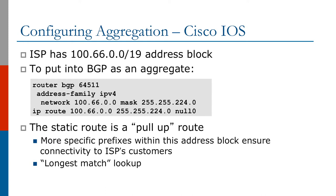So how do you configure an aggregate? We will be providing examples based on Cisco IOS. Imagine an ISP has been allocated 100.66.0.0/19 address block. To insert this aggregate into BGP, you would add a network statement under the address family IPv4 of the BGP configuration as shown on the screen. You would then add an IP route statement of the prefix with a next hop of null zero. This static route is called a pull-up route.